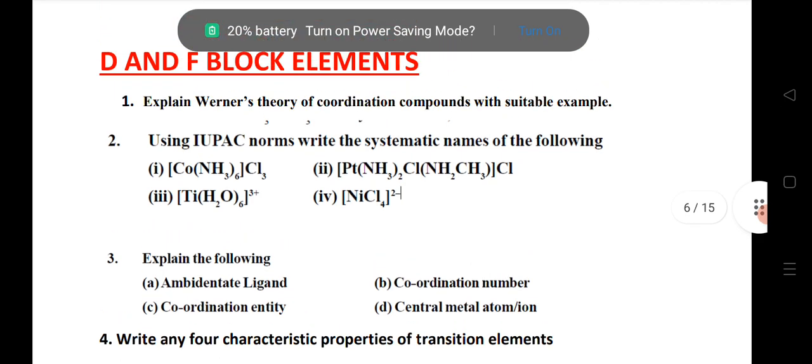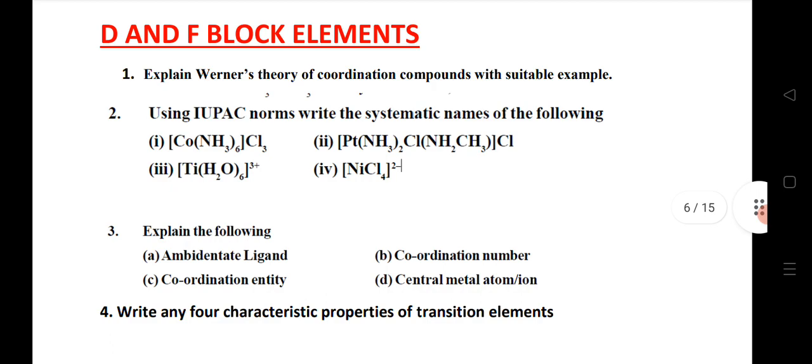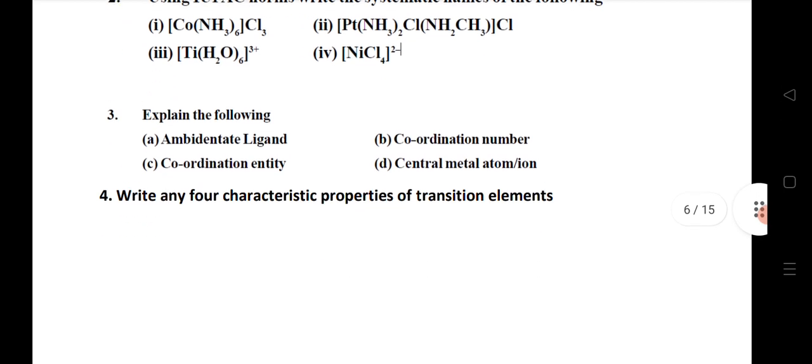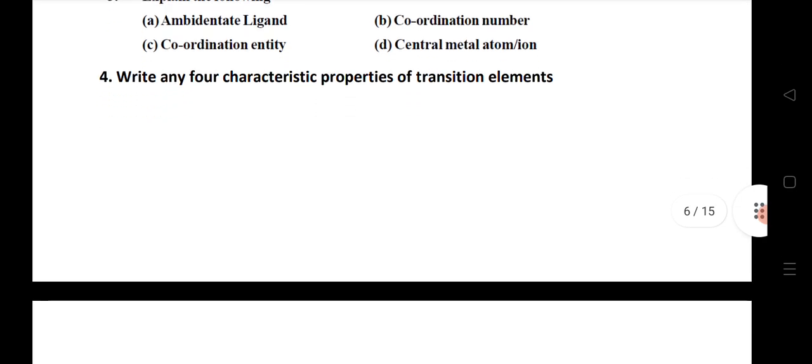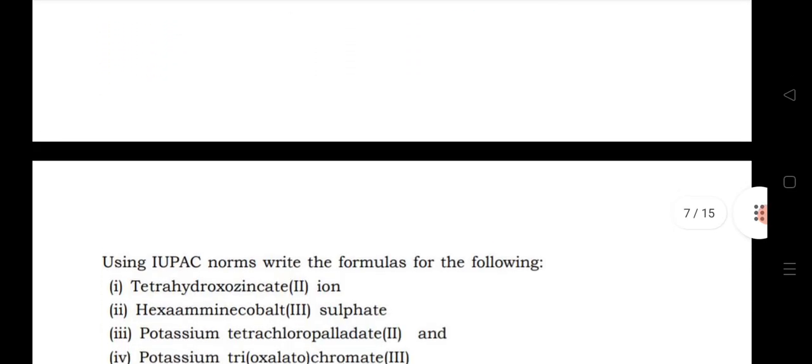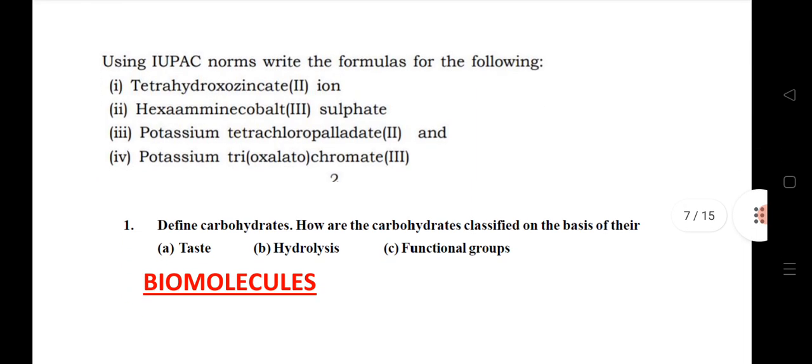D block elements I have given very important questions: explain Werner's theory, important question IUPAC naming, next explain the following: ambidentate ligand, coordination number, coordination entity, central atom, metal ion, and write four characteristic properties of transition elements.